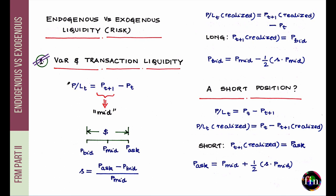When we had done these approaches for VAR estimation, the starting point or the input to these approaches was the time series of the PL or the returns. Specifically, for a long position, the PL over a period from T to T+1 can be computed as the price or valuation at exit minus the price at entry, ignoring any income realized over that period.